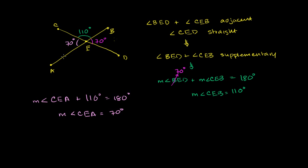So this one is also 70 degrees. And what we'll learn in the next video is that this is no coincidence. These two angles — angle CEA and angle BED — are sometimes called opposite angles, but the more correct term is vertical angles. We've just seen a special case where these vertical angles are equal, but it actually turns out that vertical angles are always equal. So angle CEA and angle BED are vertical angles.